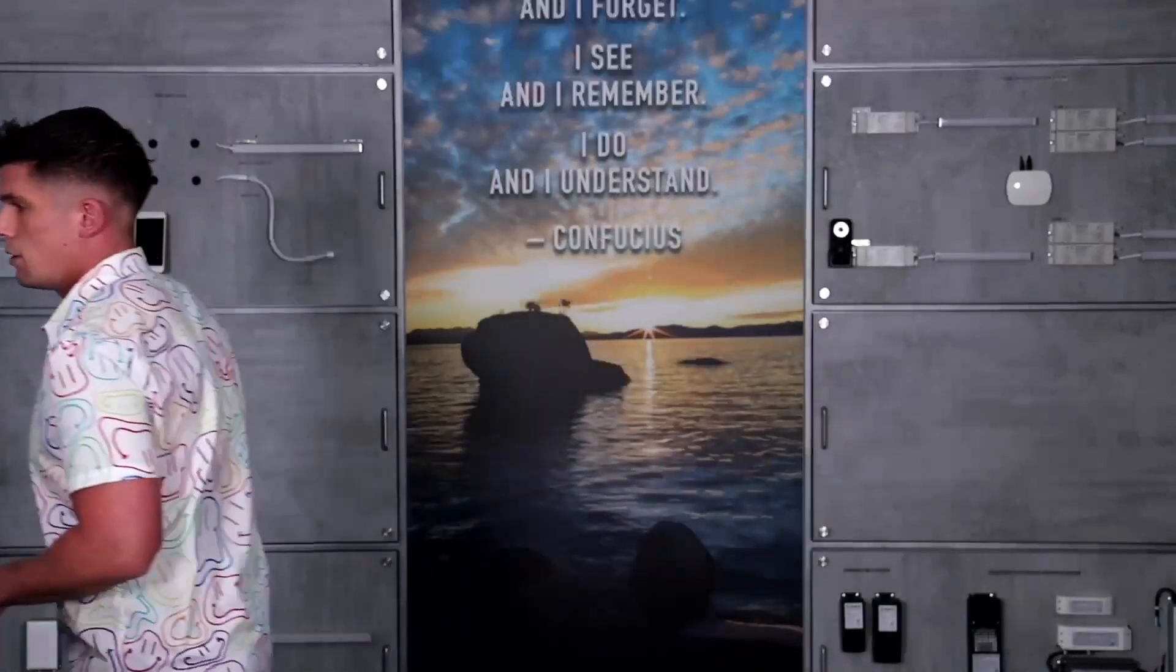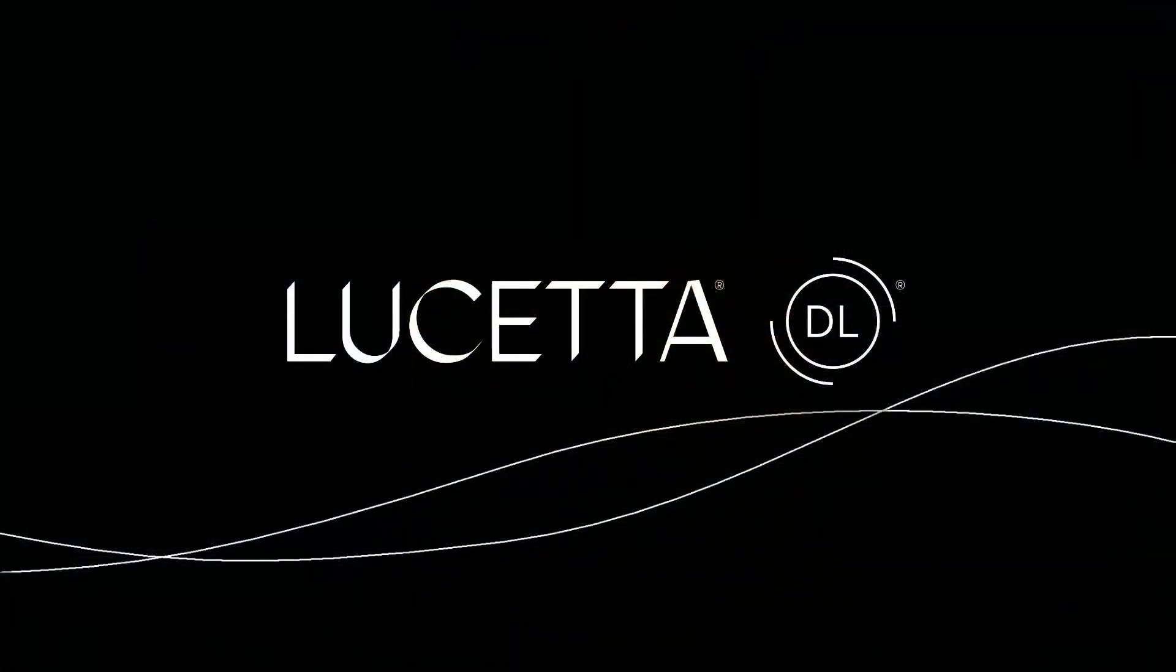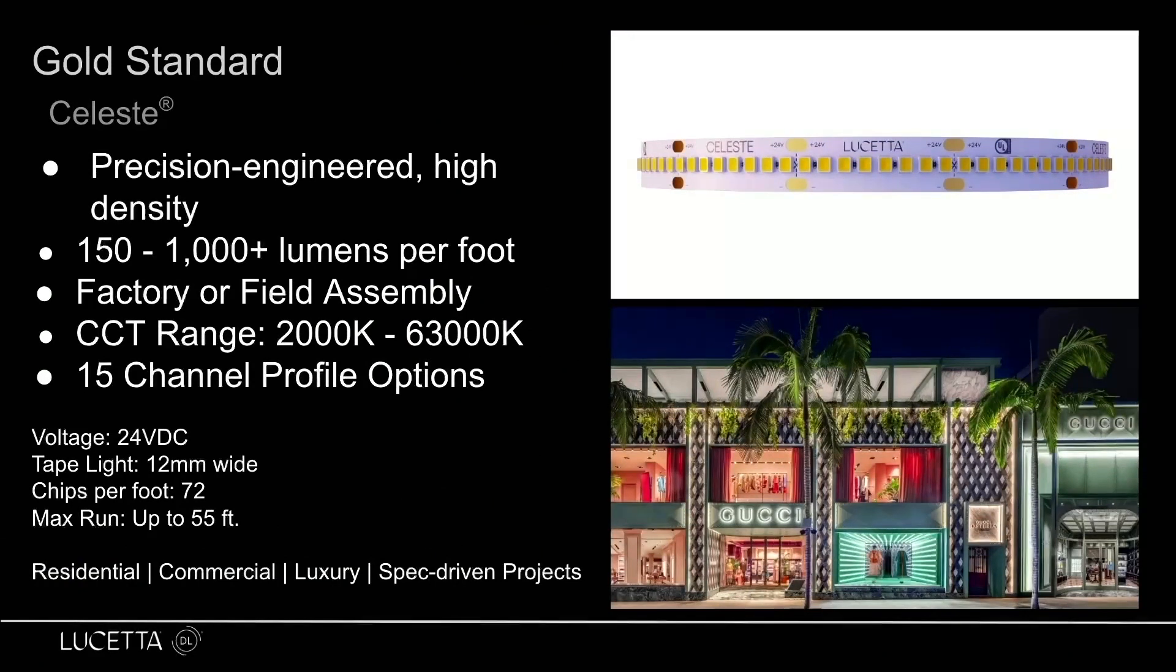All right, so I want to go over the actual specs of Celeste first. And then today we're going to have a little bit of a higher understanding too of CRI and R values and gamut fidelity. I think it's necessary with Celeste and this tape light due to it being our gold standard. In my opinion, I think this is one of the best tape lights on the market by far. I'm hoping today we'll be able to prove that through some of the specs, as well as hopefully in the future getting this in your hands. Because obviously with training, seeing is believing—getting to actually see this product in hand, shining it on different actual colors and seeing how those actual colors render.